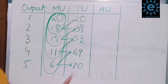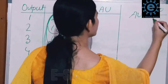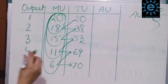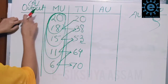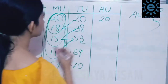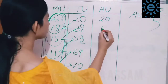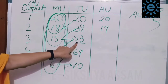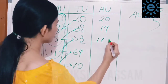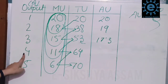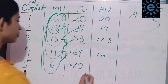Now for average utility: AU equals TU divided by Q. First unit: 20 divided by 1 equals 20. Second unit: 38 divided by 2 equals 19. Third unit: 53 divided by 3 equals 17.3. Fourth unit: 64 divided by 4 equals 16. Fifth unit: 70 divided by 5 equals 14.